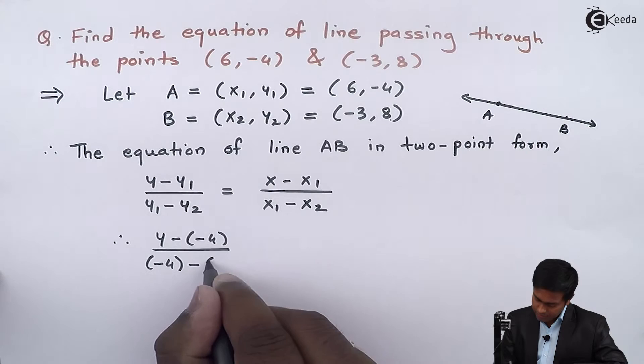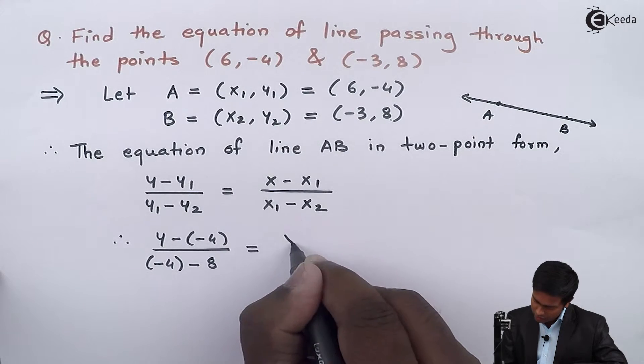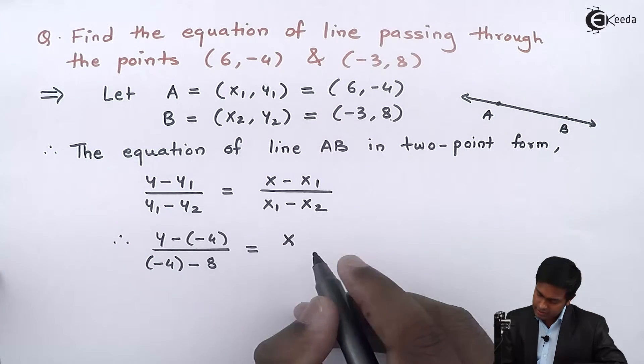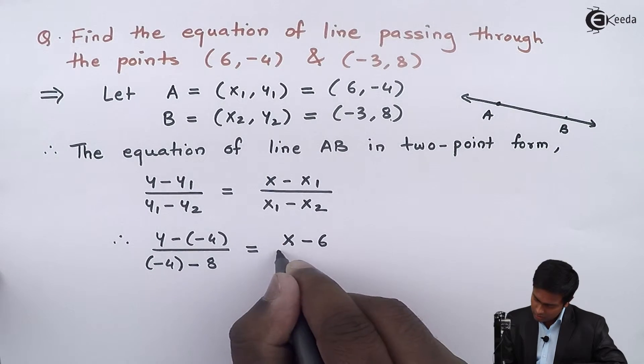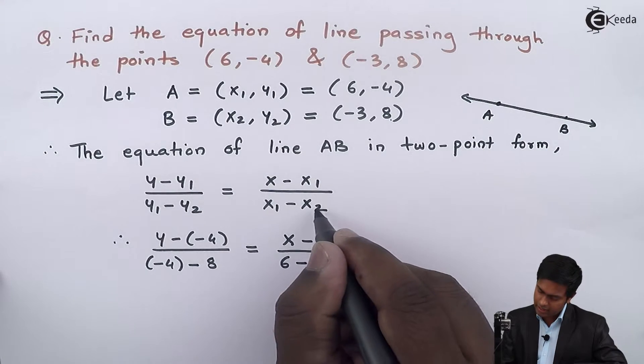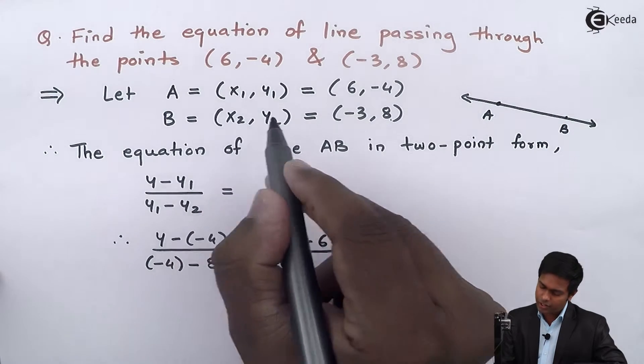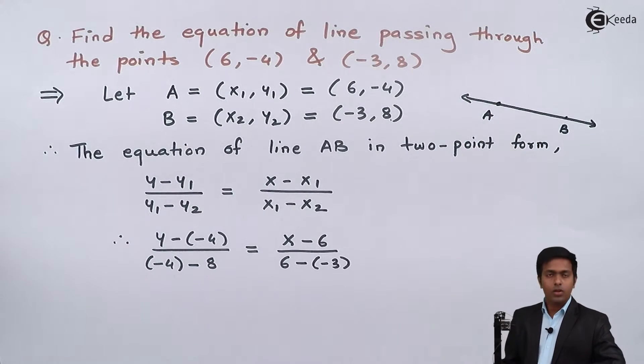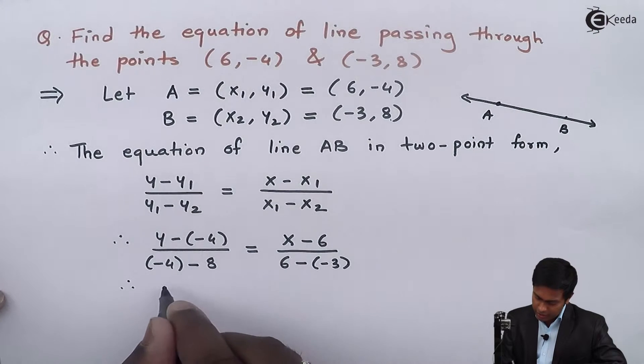This equals (x - x₁), so x₁ is 6, giving us (x - 6)/(6 - x₂). The value of x₂ is -3, so 6 - (-3).